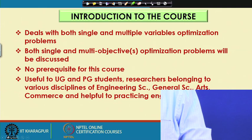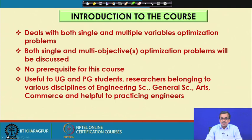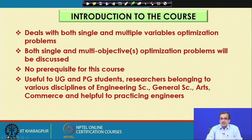This particular course will deal with both single and multiple variable optimization problems. Both single and multi-objective optimization problems will be discussed in detail with suitable examples. There is no prerequisite for this particular course. This course will be useful to UG and PG students, researchers belonging to various disciplines of engineering science, general science, arts, commerce, and of course, it will be useful to practicing engineers.